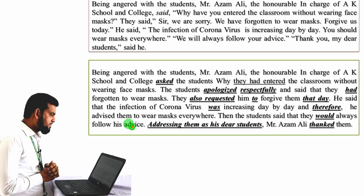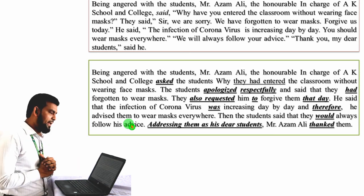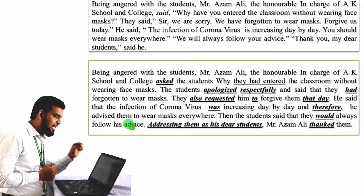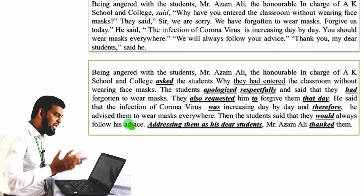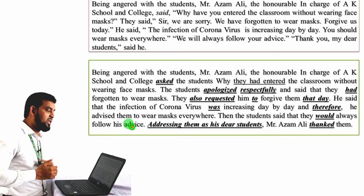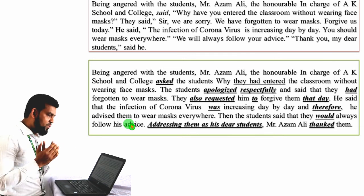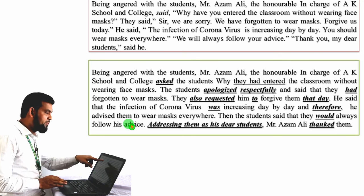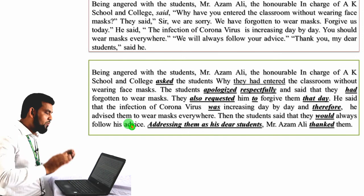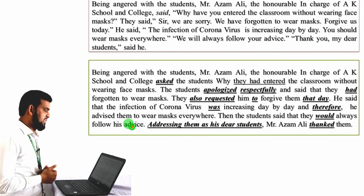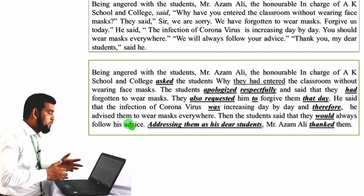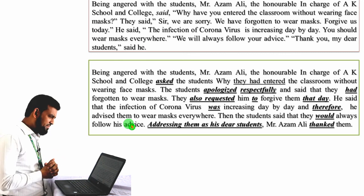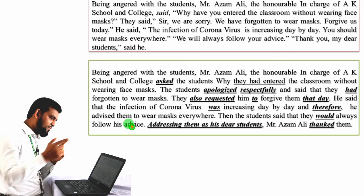Next, they said: 'Sir, we are sorry. We have forgotten to wear a mask. Forgive us today.' Here the students have used three sentences. 'Sir' is a vocative case. 'We are sorry' — since we find 'sorry', we should use 'apologised'. So: the students apologised respectfully to sir. 'We have forgotten' will become 'they had forgotten to wear a mask'. And the next sentence, 'Forgive us today' — though there is no 'please', we can understand it is a request to sir. So we can say they also requested him, and since the sentence is imperative starting with a verb, we use 'to' in place of the inverted comma — 'to forgive them', and 'today' becomes 'that day'.